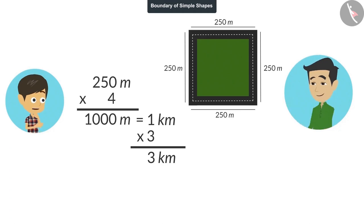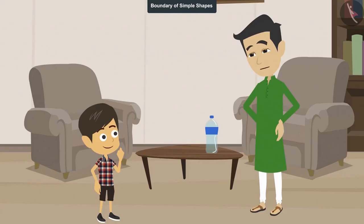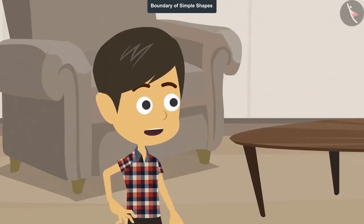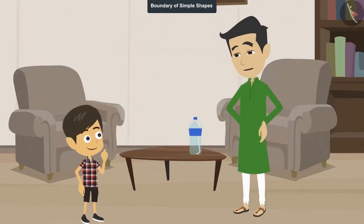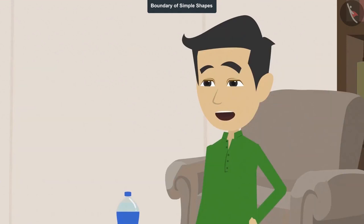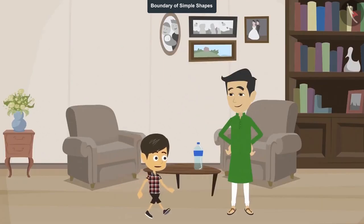Oh, now I get it. You walk 3 kilometers in the morning and 3 kilometers in the evening. This way, you walk 6 kilometers every day. Yes, Rayanj, that is what I do. How many kilometers should I walk daily to stay healthy? Children should play in the park to stay healthy. That is why I am taking you to the park. You play and I'll take a walk. Okay, Papa. Let's go.